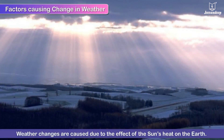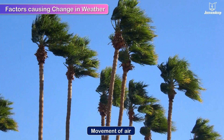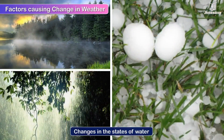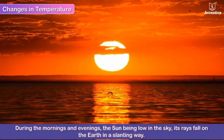Factors causing change in weather. Weather changes are caused due to the effect of the Sun's heat on the earth. Changes in temperature, movement of air, and changes in the states of water are some phenomena caused by the Sun which result in change in weather. Let us see how this happens.